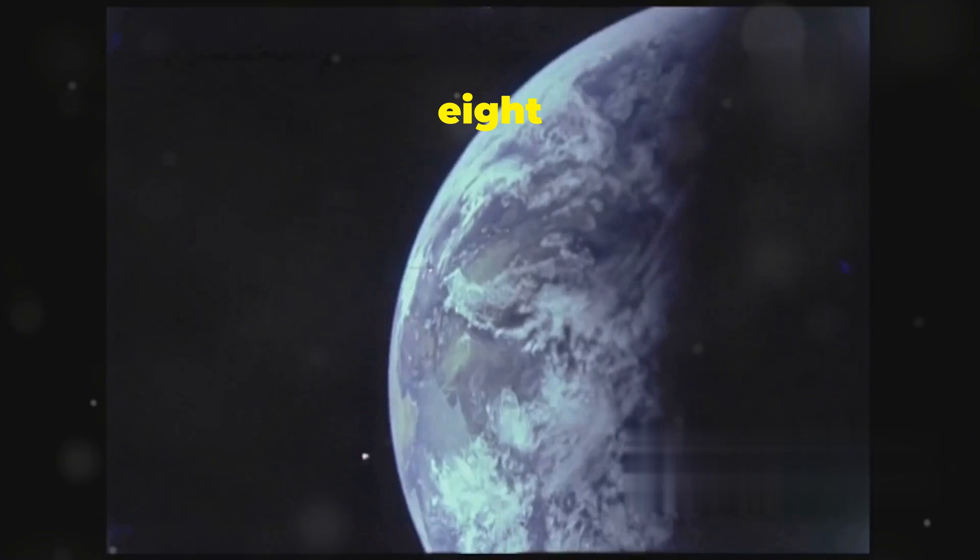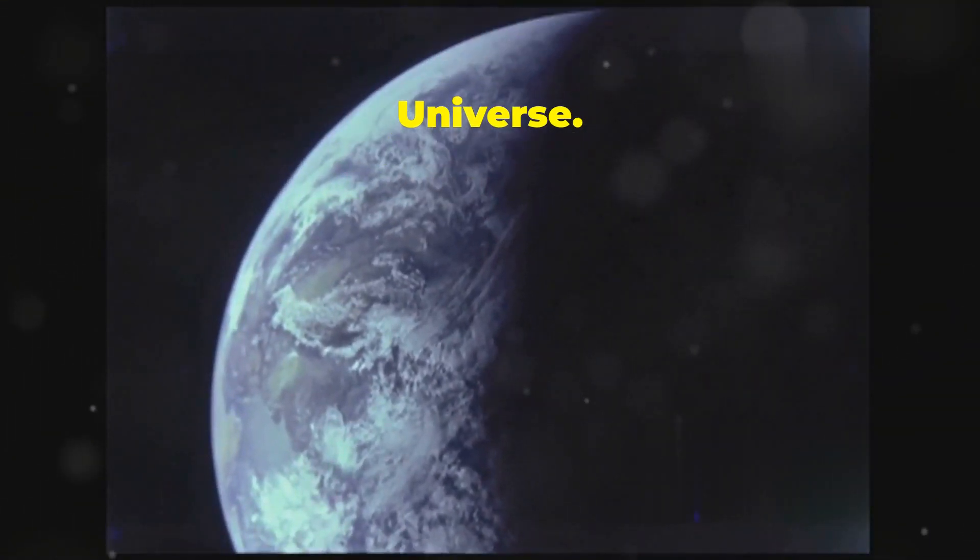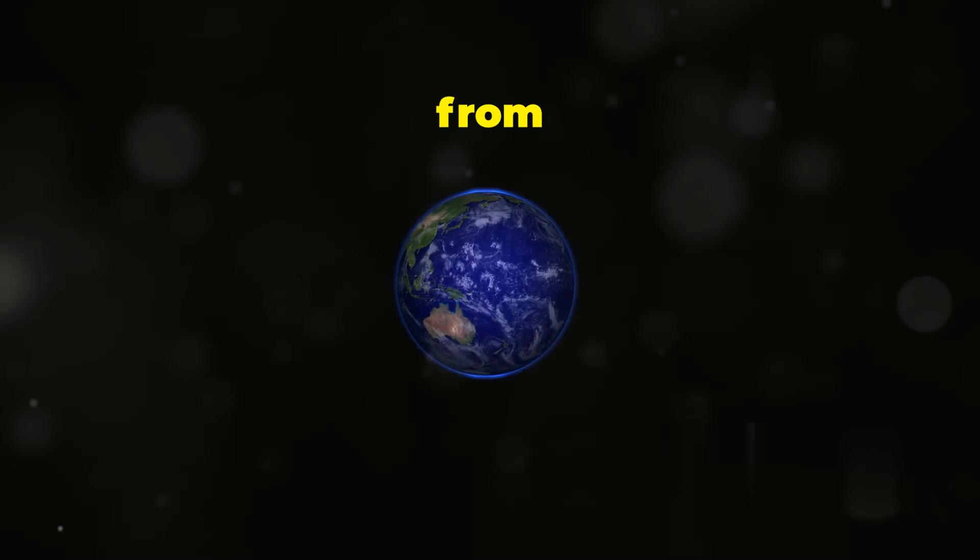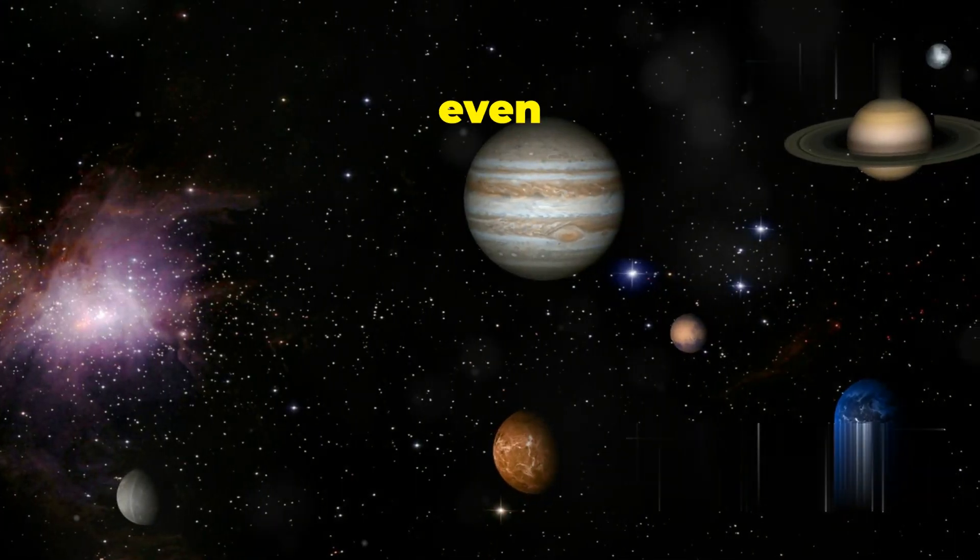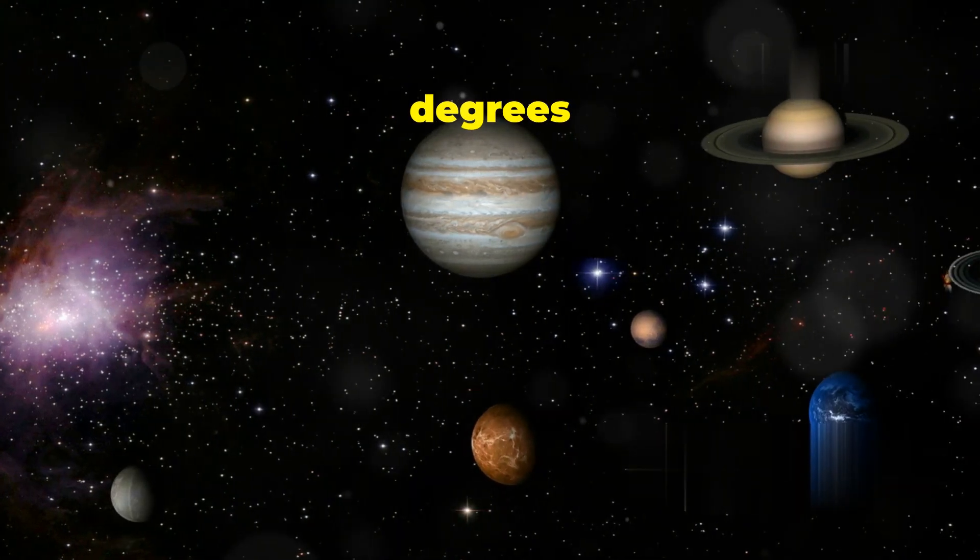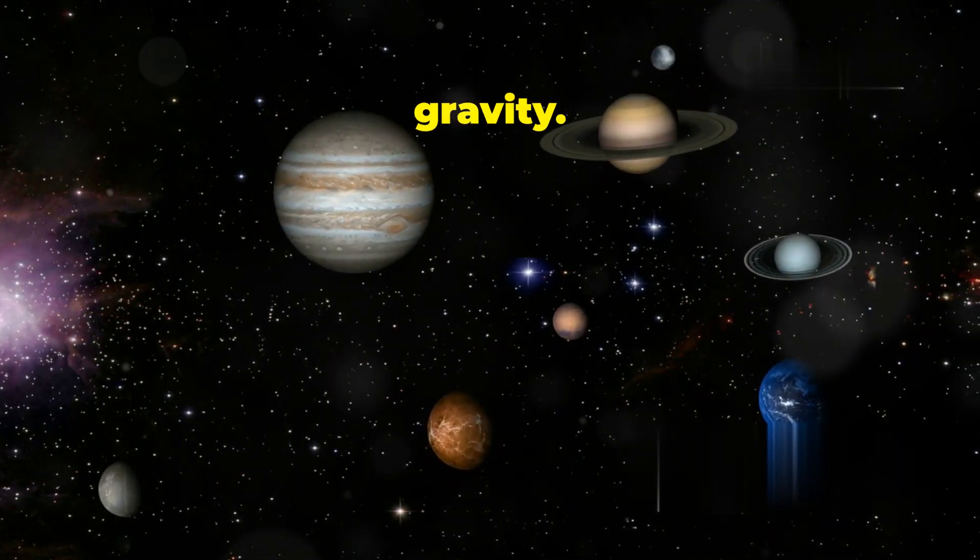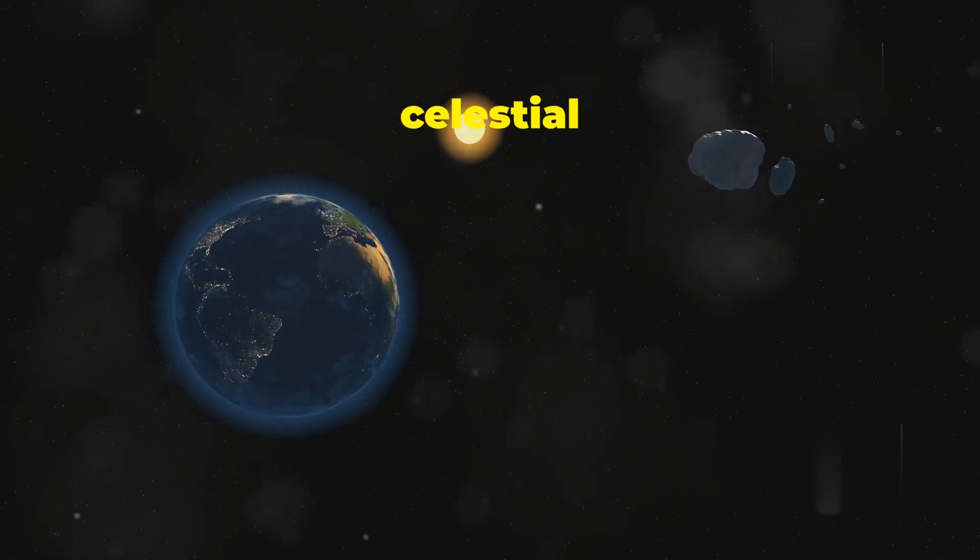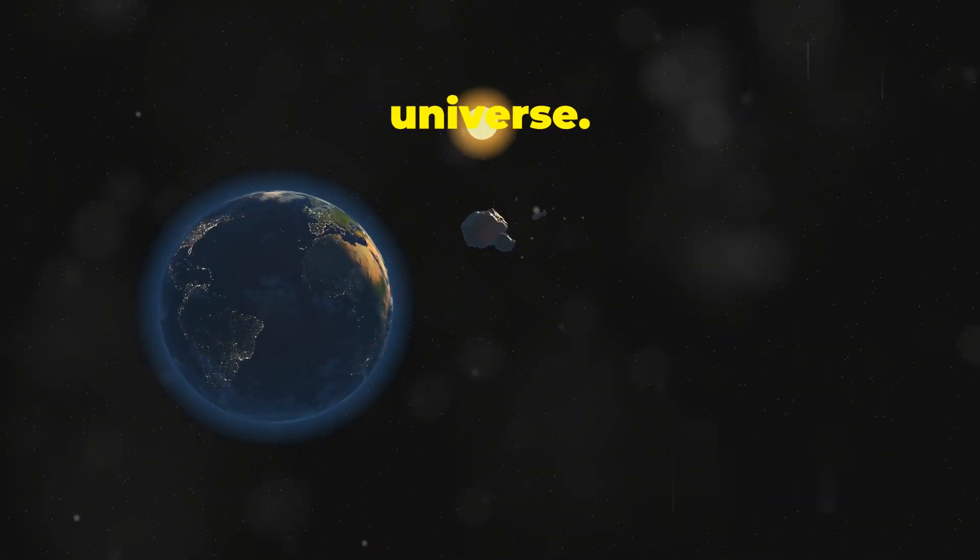Earth's oblateness, far from being unique, is a common feature among celestial bodies. Planets, stars, and even black holes exhibit varying degrees of oblateness, showcasing the universal influence of rotation and gravity. By studying these celestial cousins, we gain a broader perspective on the forces that shape our universe.